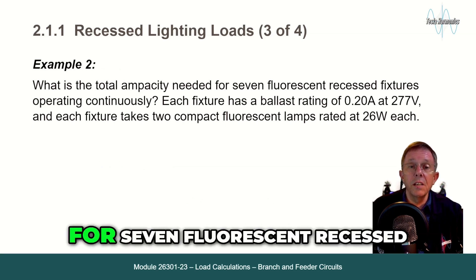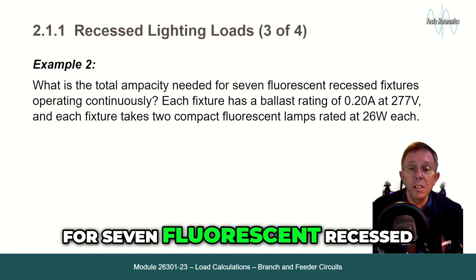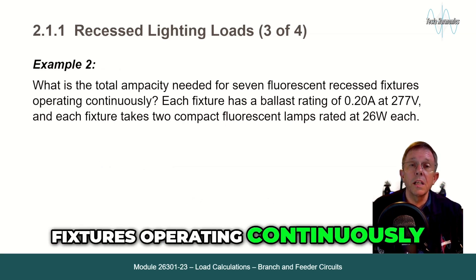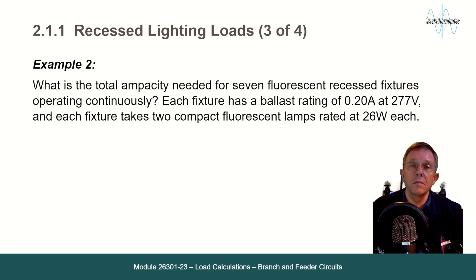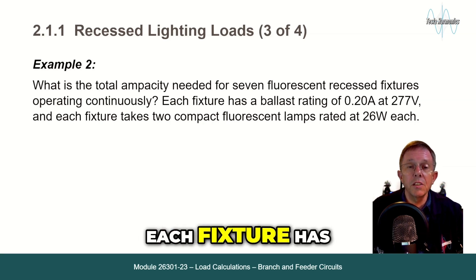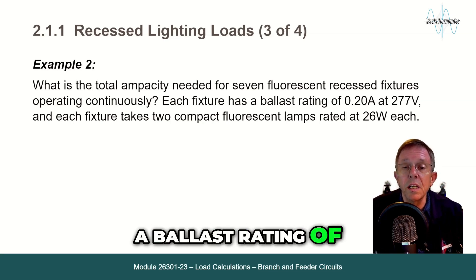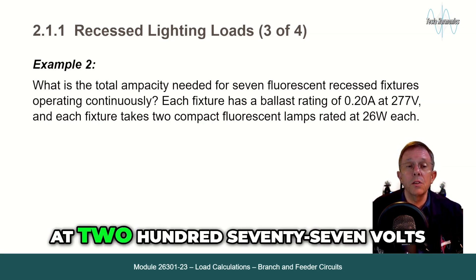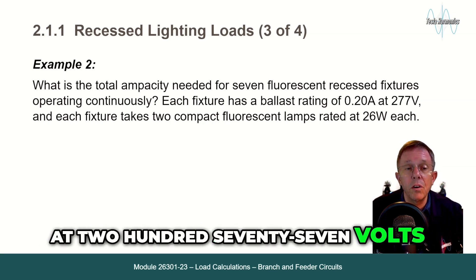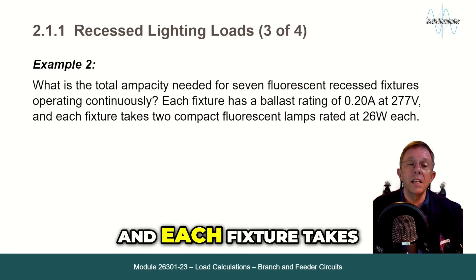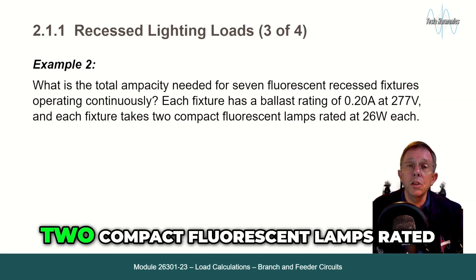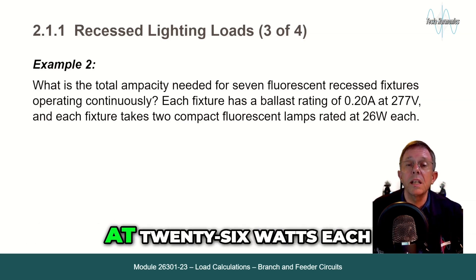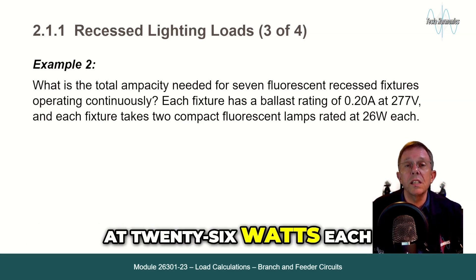What is the total ampacity needed for seven fluorescent recess fixtures operating continuously? Each fixture has a ballast rating of 0.20 amps at 277 volts, and each fixture takes two compact fluorescent lamps rated at 26 watts each.